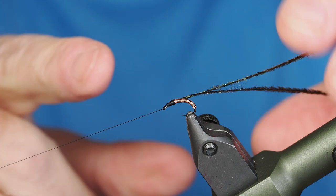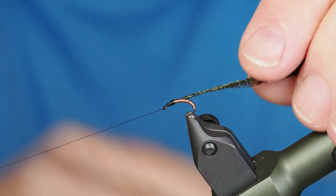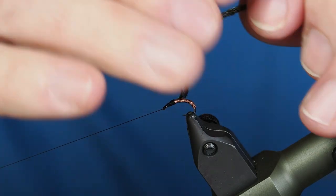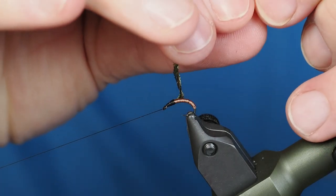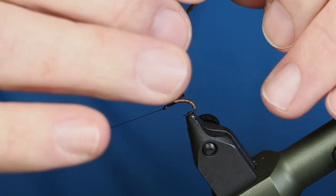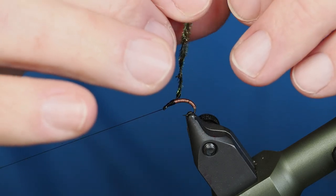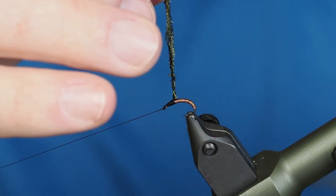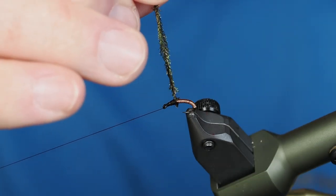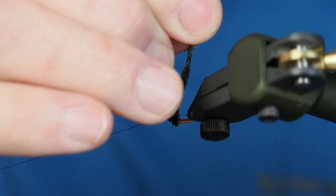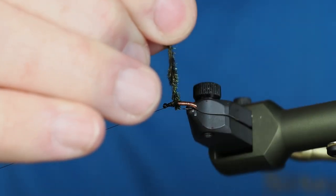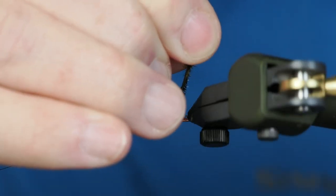Once again I've just got my thread in the bobbin cradle. I'm going to take my two peacock herls, kind of spin them in my fingers so that they kind of join together spun up. And that just for me helps keep those peacock herls from separating as I'm taking my wraps. You don't necessarily need to do that, but that just works for me. And I'm just going to use my rotary and we're going to just take one wrap right in front of the other to create a little bit of a buggy, bulky peacock herl head here.